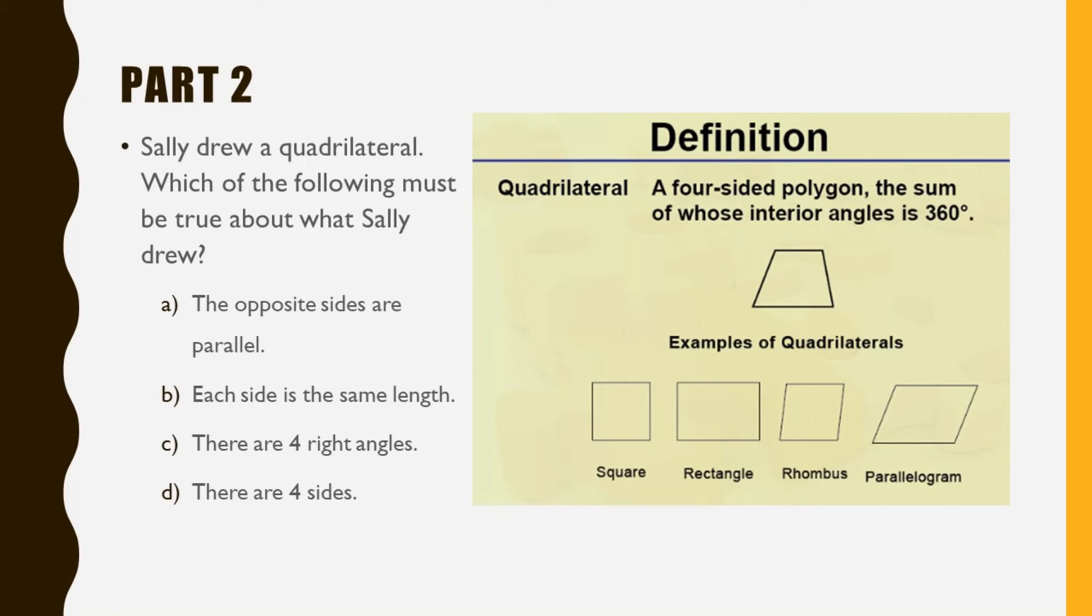Let's determine the answer to part 2. Sally drew a quadrilateral. The definition of a quadrilateral is a four-sided polygon, a four-sided shape. So which of the following must be true about what Sally drew?